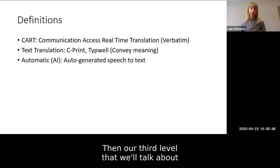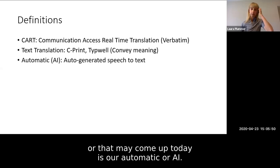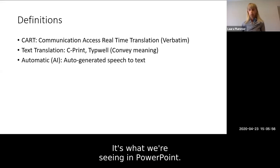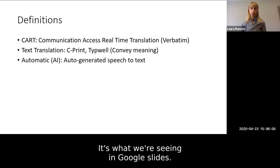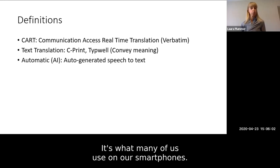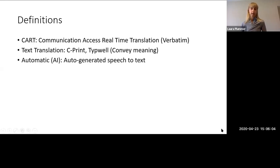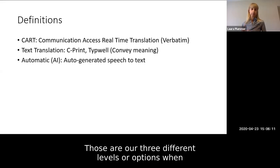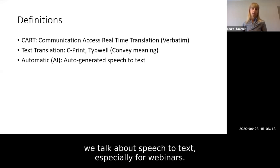Our third level is automatic or AI — the auto-generated speech to text. It's what we're seeing in PowerPoint, in Google Slides, and what many of us use on our smartphones. It takes the spoken word and the computer generates it into a text-based format. Those are our three different levels or options when we talk about speech to text, especially for webinars.